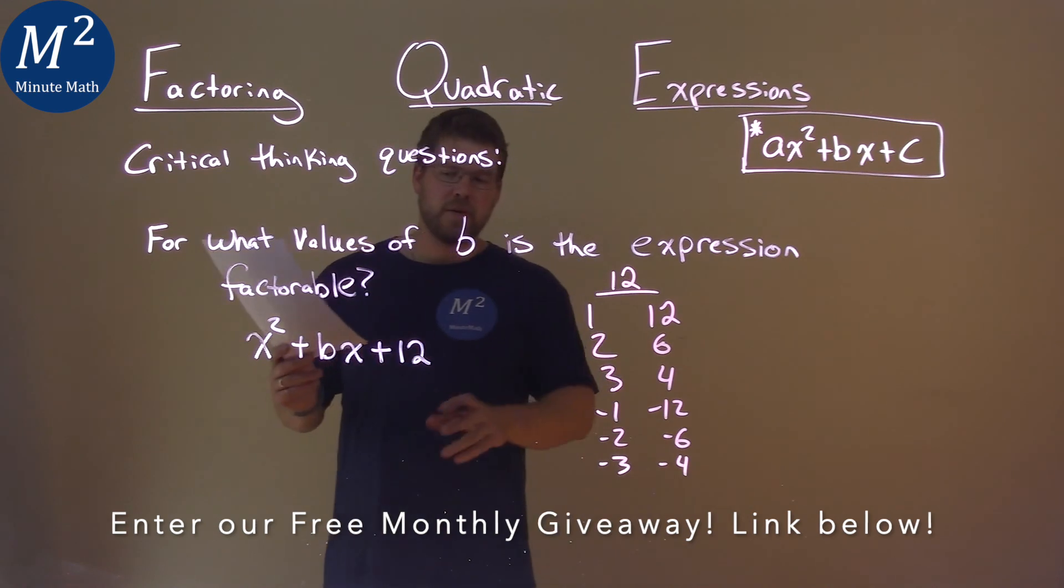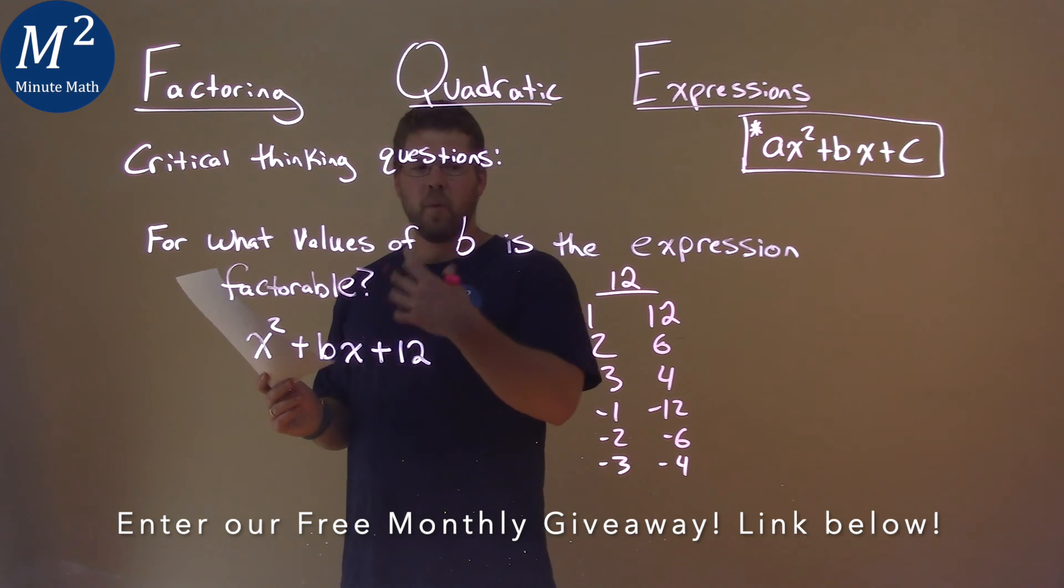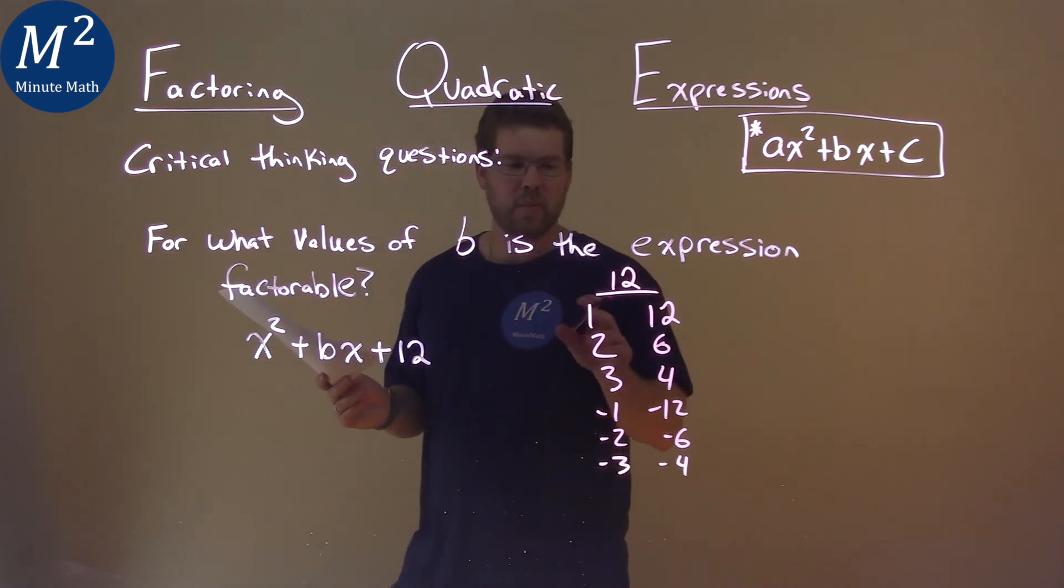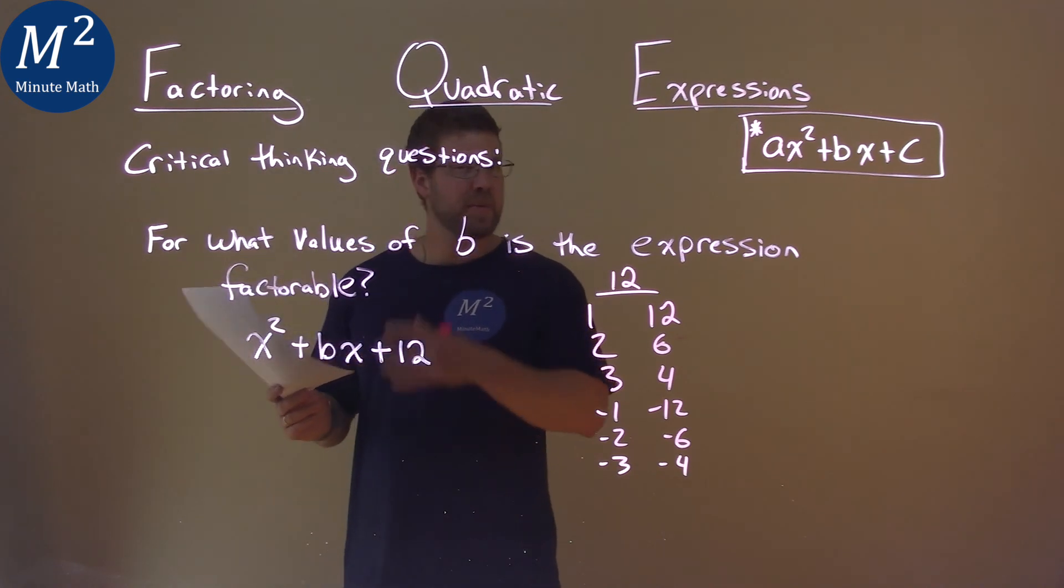So this list is actually important to find our b-value because we know when we factor, normally it'd be what two numbers multiply to be 12 but add to be a b-value here. But we don't know what the b-value is.